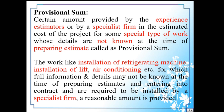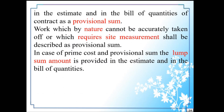For example, work like installation of a refrigerating machine, installation of a lift, installation of air conditioning, etc., for which full information and details may not be known at the time of preparing the estimate and entering into contract, and which are required to be installed by a special firm or specialist — for these, a reasonable amount is provided in the estimate and in the bill of quantities of the contract as a provisional sum.